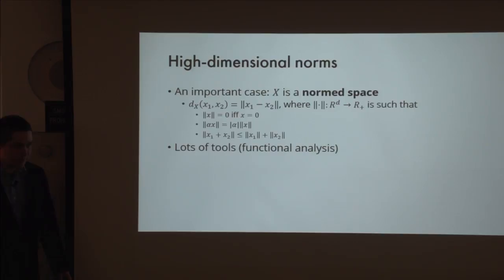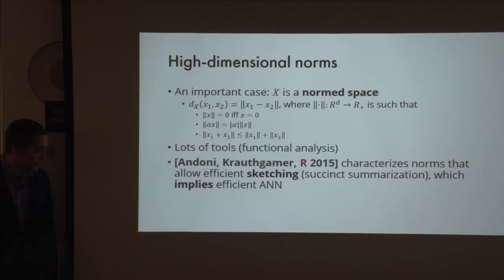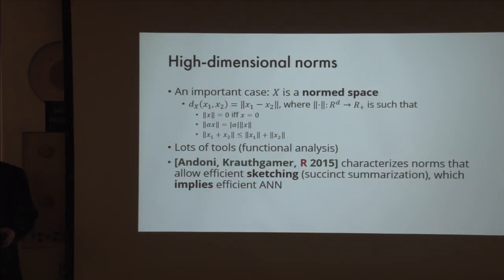There are related results that give hope for doing something nice for general norms. For example, there is a result with Alex Andoni and Robbie Krauthgamer where we characterize norms that allow efficient sketching: you take a vector, compress it, and from two compressed versions estimate the distance between them. For general metrics, it's hopeless to characterize when this is possible, but for norms it turns out to be possible. Efficient sketching implies efficient approximate nearest neighbor search, but nearest neighbor search might be a more doable problem.